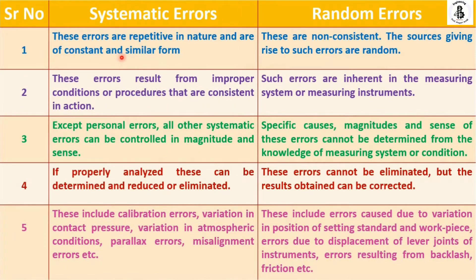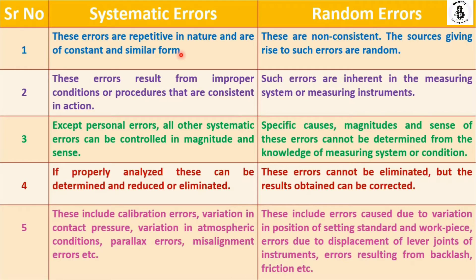Starting with systematic errors: these errors are repetitive in nature and they are constant and similar in form. If it has a positive value, each and every time it will be repeated and it will have a constant value — you can consider it as a characteristic type of error.